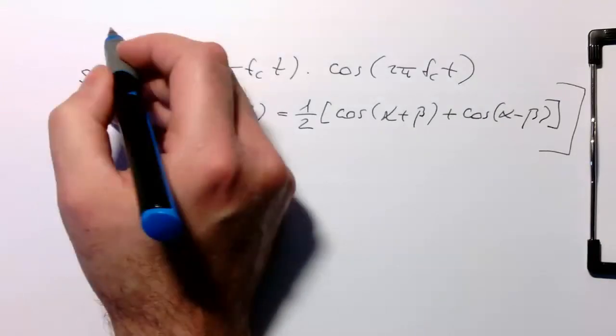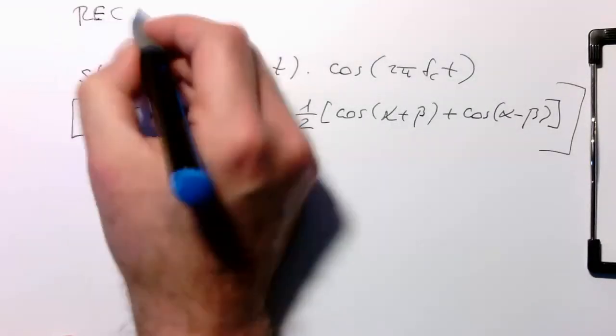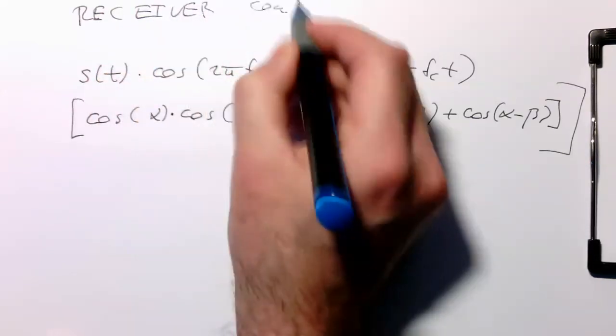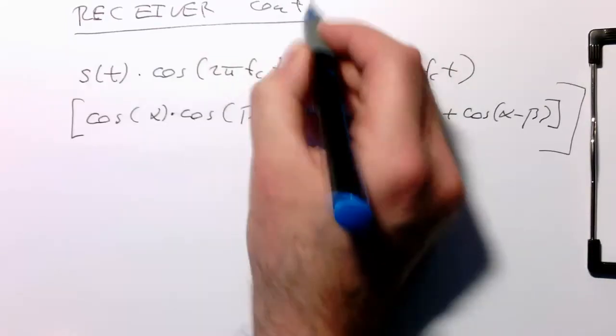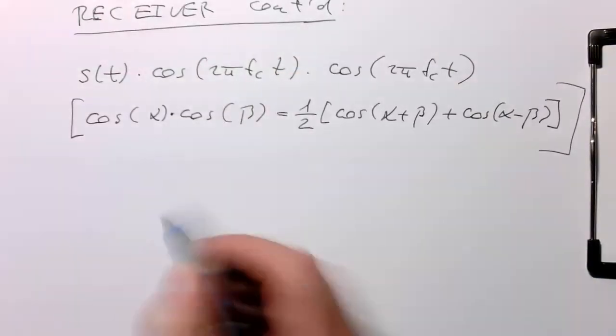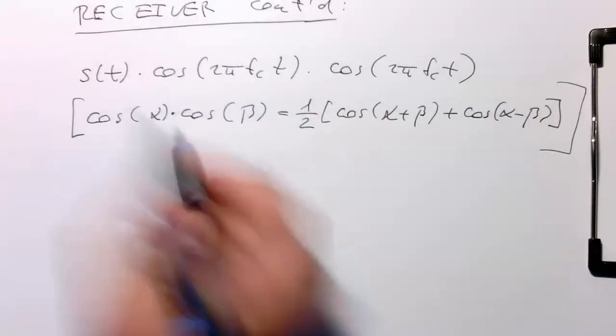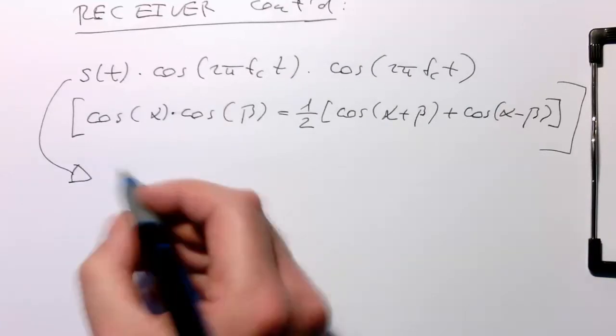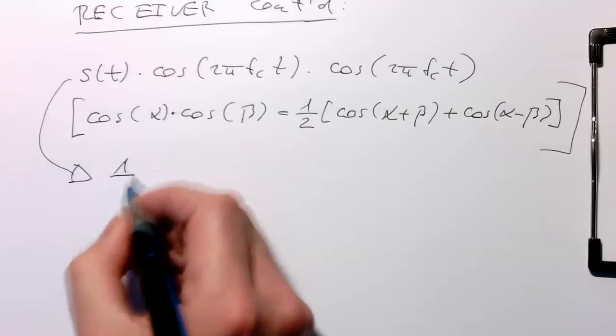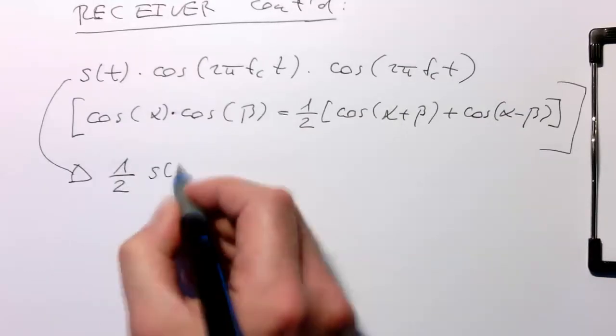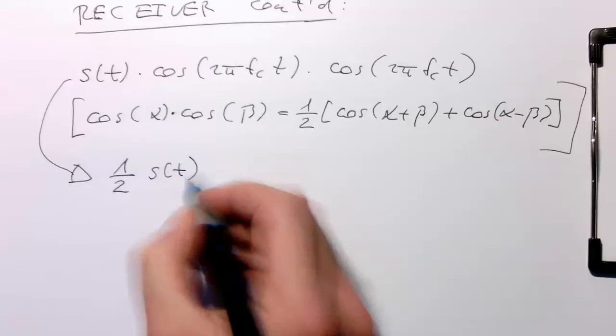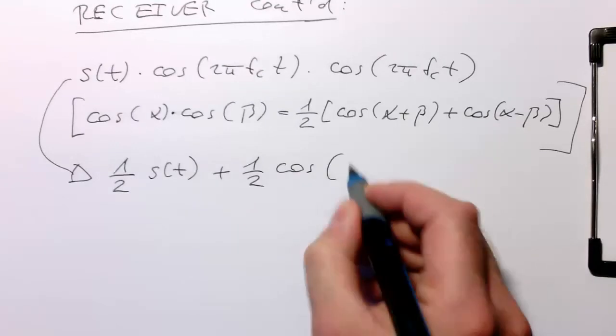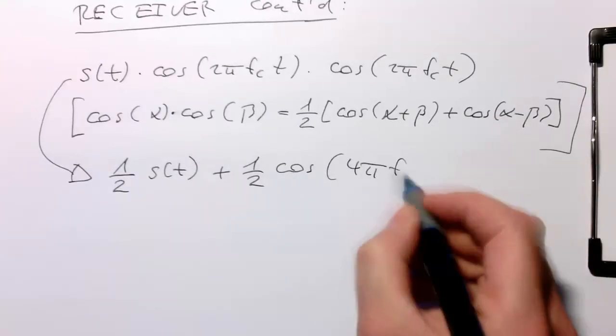Receiver continued. With that equation, we can rewrite this as ½ s(t) plus ½ cosine 4π fc t.